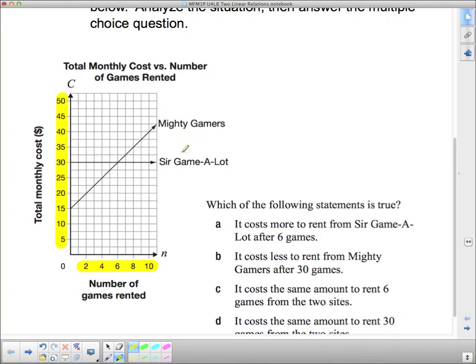Sir Game-A-Lot is flat lined. You pay $30 a month and you can rent as many games as you want. Mighty Gamers looks like you pay $15 a month to start with if you're renting no games at all. So that's an upfront fee. And then you pay something per video game. Now we can actually figure out what that something is if we drew our little triangle in there and found out what our rate of change is. Let's actually do that.